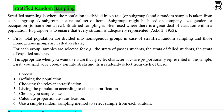Stratified Random Sampling. Stratified sampling is where the population is divided into strata, or subgroups, and a random sample is taken from each subgroup. A subgroup is a natural set of items. Subgroups might be based on company size, gender, or occupation, to name but a few.